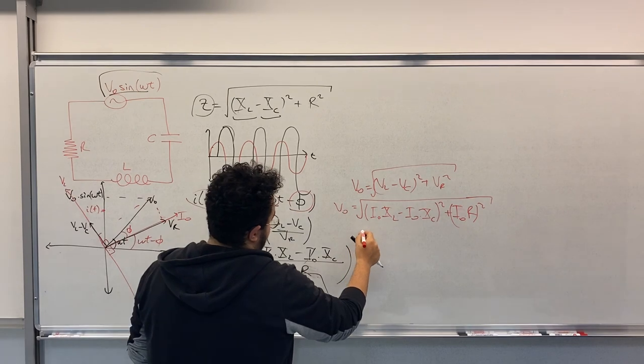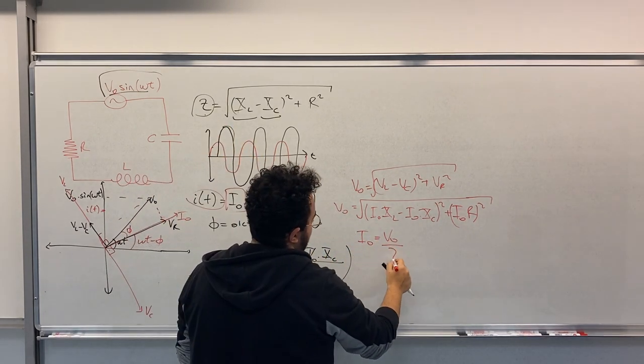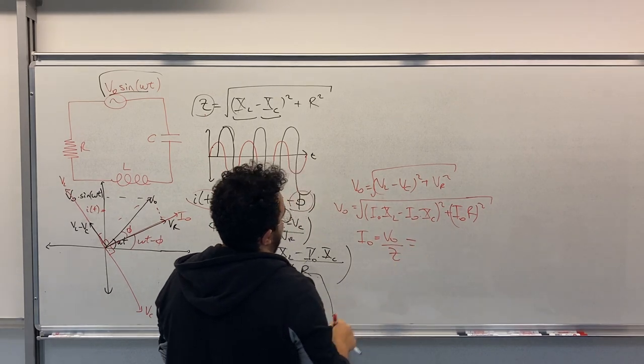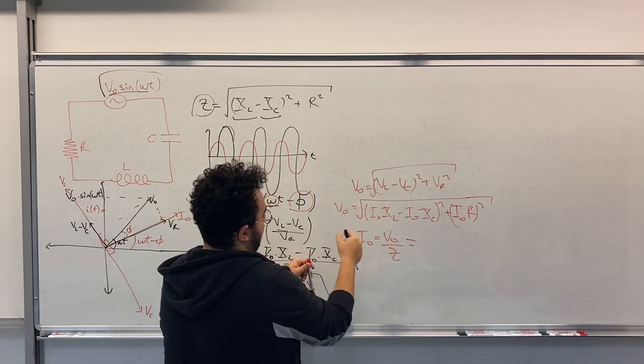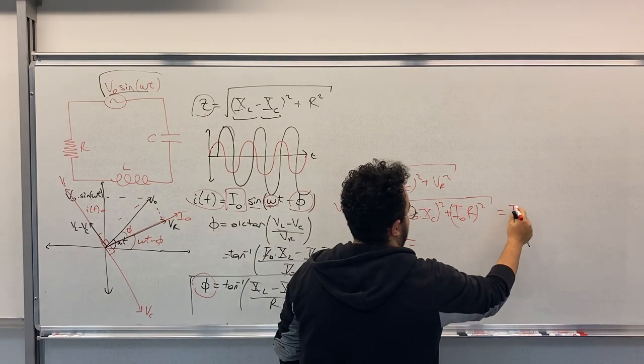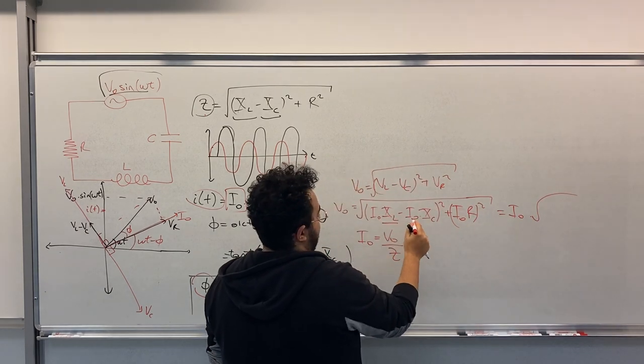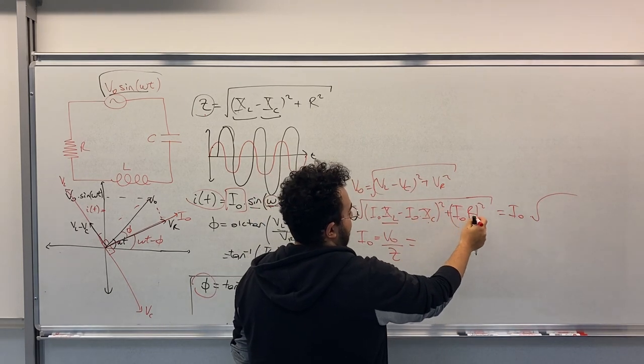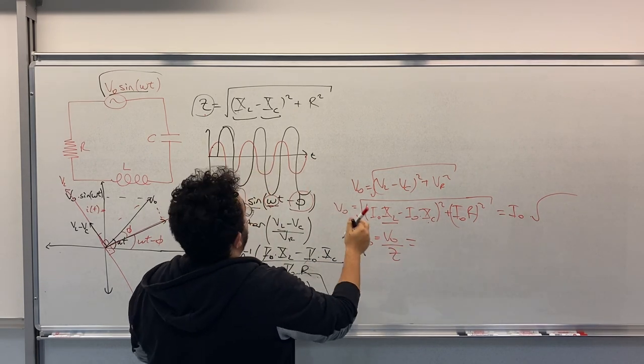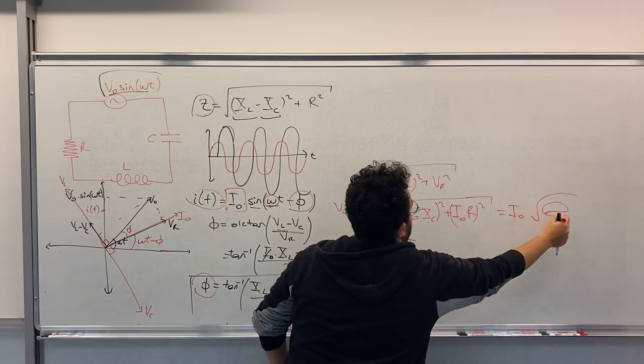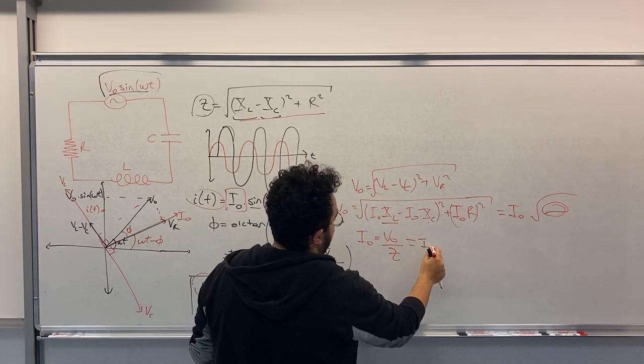So this is V0. In order to find I0, we should divide V0 with the impedance. So if you take I0 to the outside, this gives you I0 times square root of XL minus XC squared plus R squared. So this expression here is the same with this one.